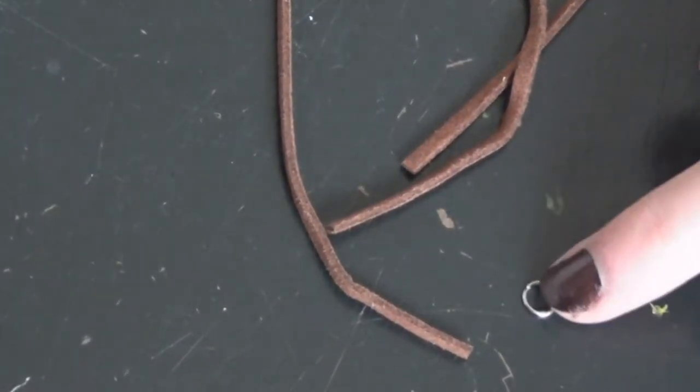So the next thing you're going to need is a jump ring and you're simply going to glue the end of each one of these pieces to the jump ring.